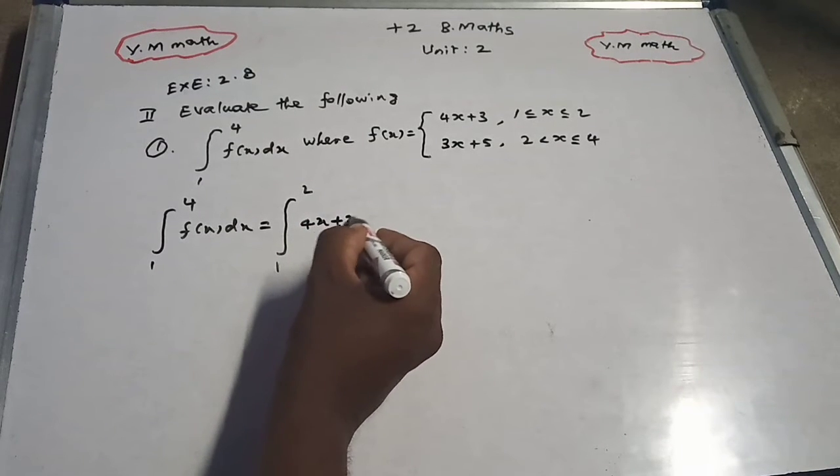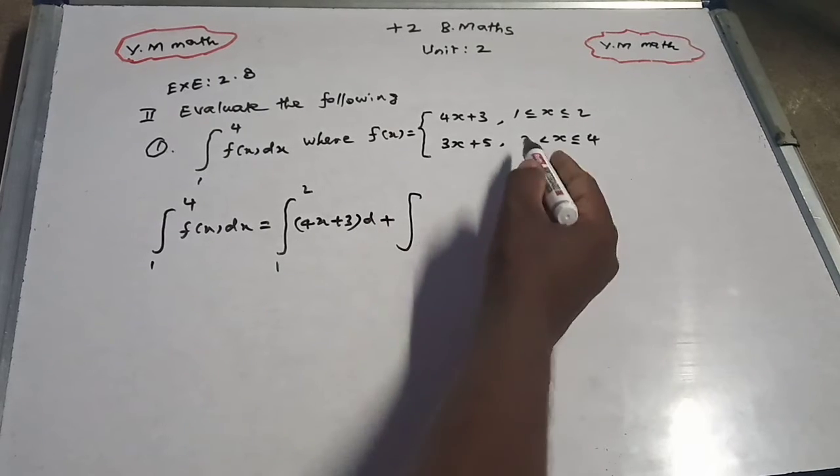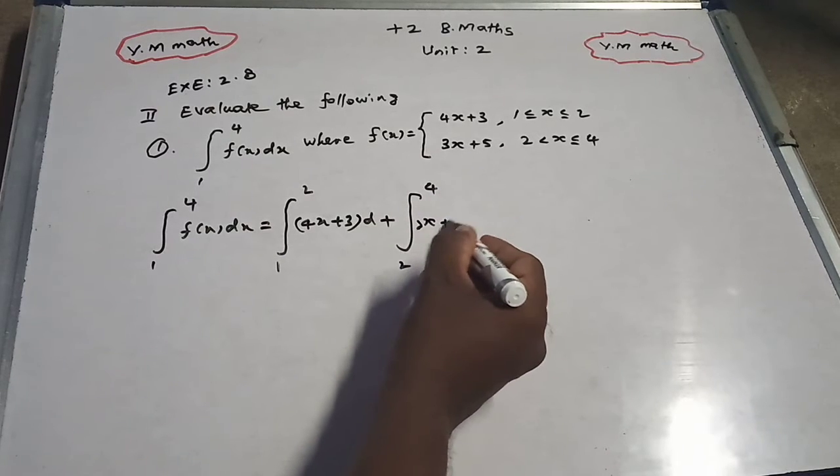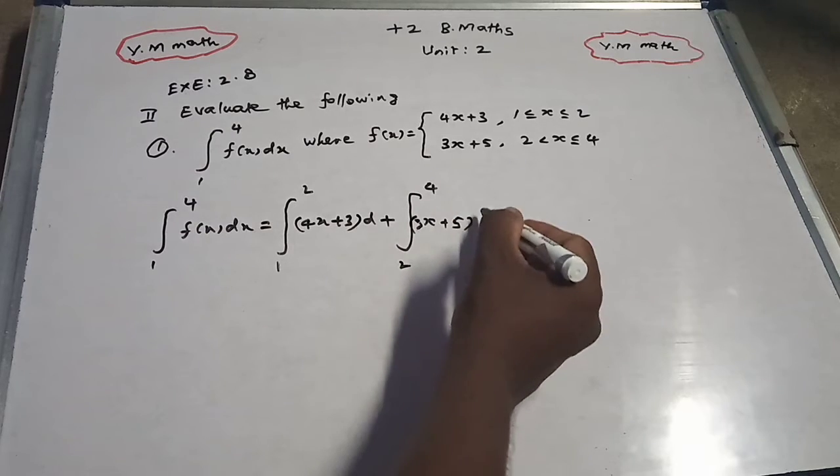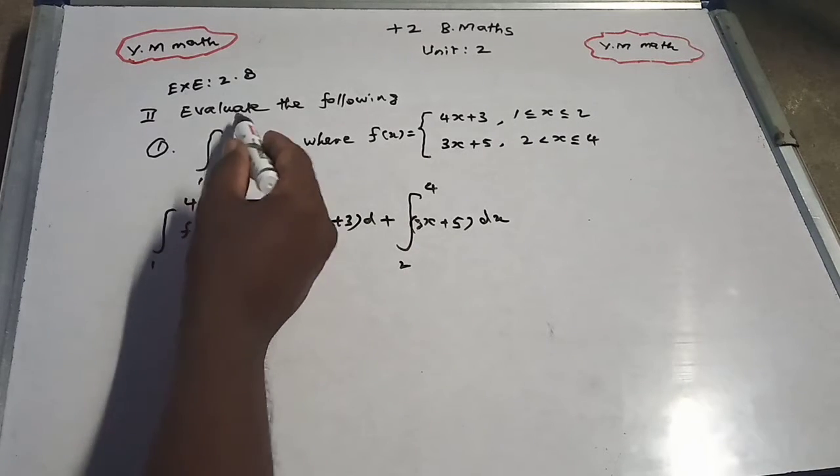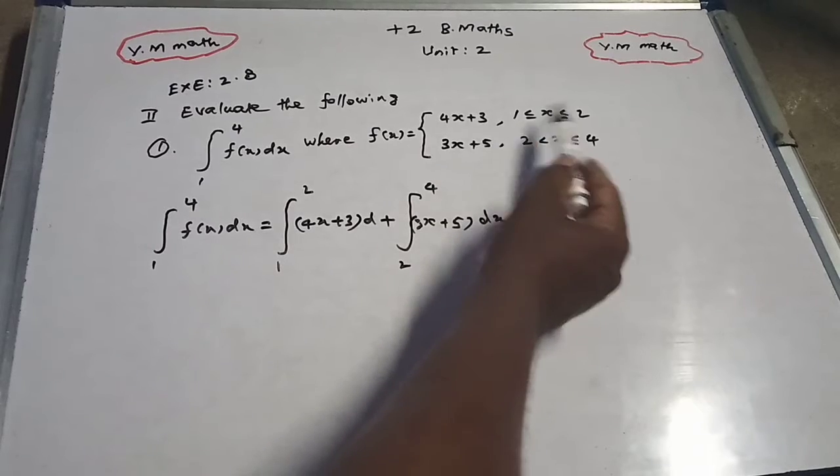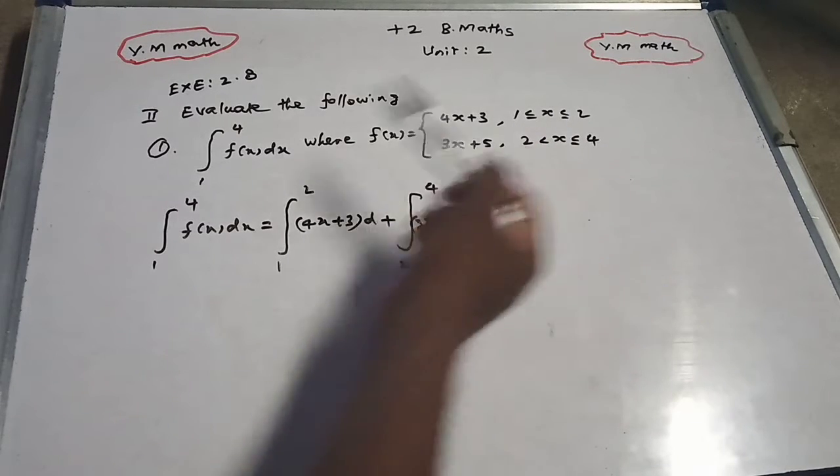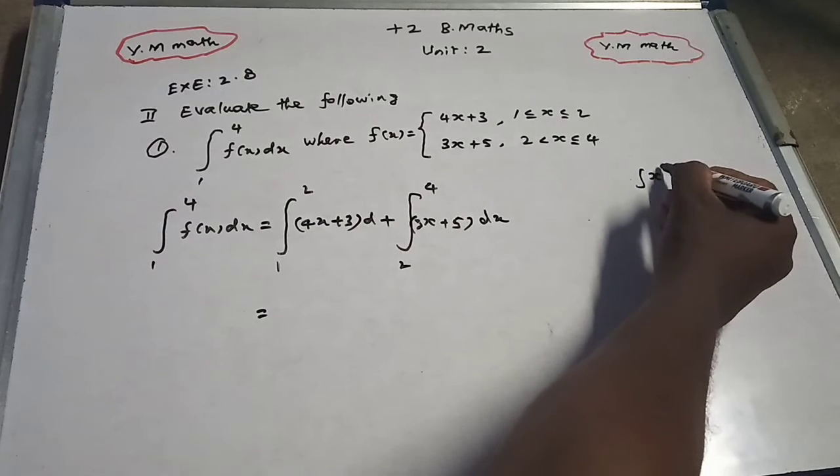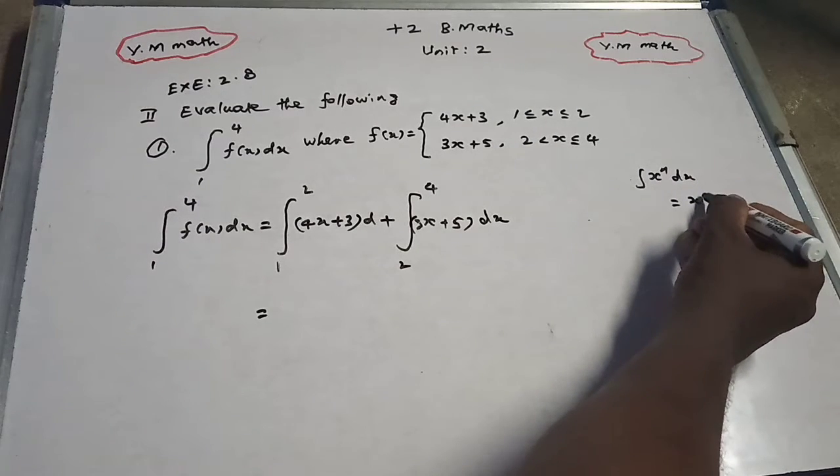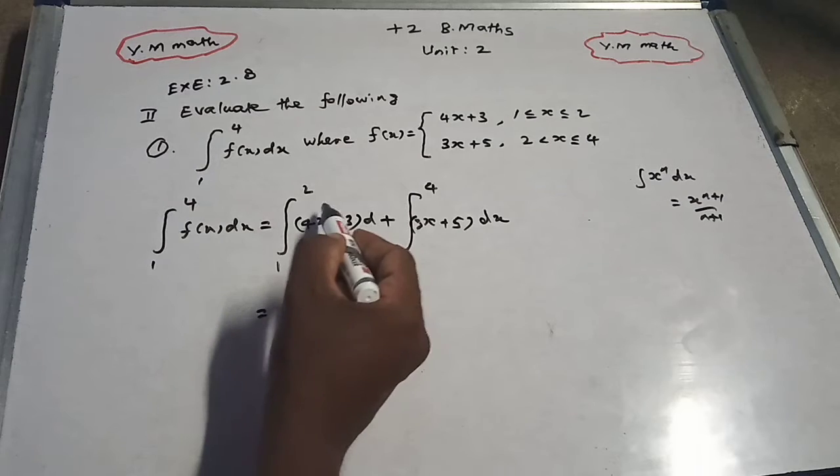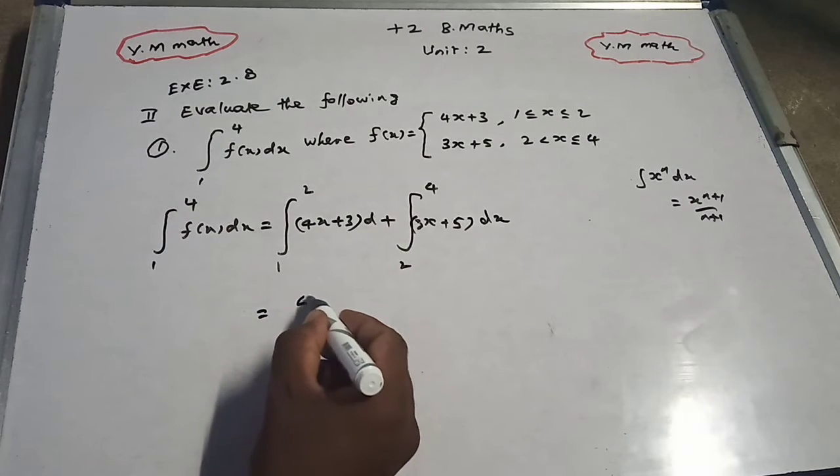So for the integral, we split it: integral from 1 to 2 with the first limit 1 to 2, then integral from 2 to 4. We use the normal integration formula x power n.